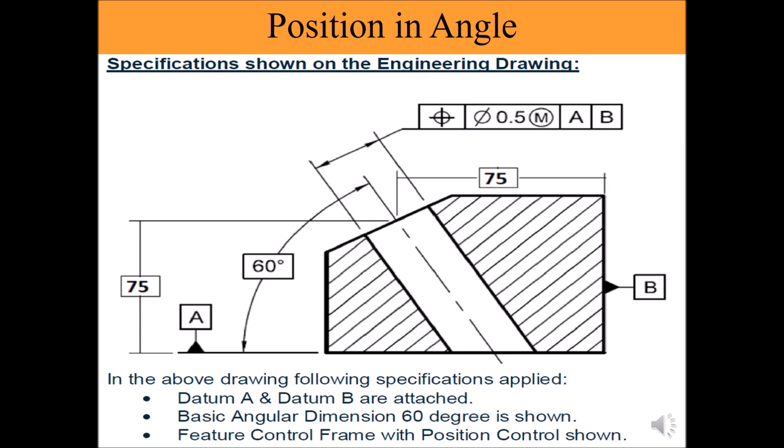Step 4: In this case the angular hole at 60 degrees is the feature to apply true position control with cylindrical tolerance zone. Step 5: Maximum material condition if necessary and then datums. Apply feature control frame as shown.